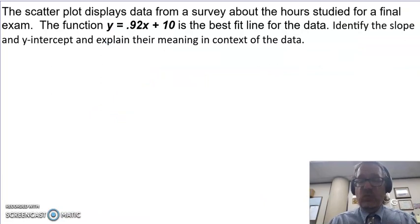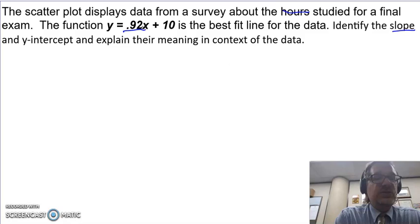Now, what does that equation tell us? So they're giving us, we're comparing minutes, not hours, studied to our final score of our final exam. So they want us to identify the slope and the y intercept in context to my problem. So slope is this number. Our slope is m.